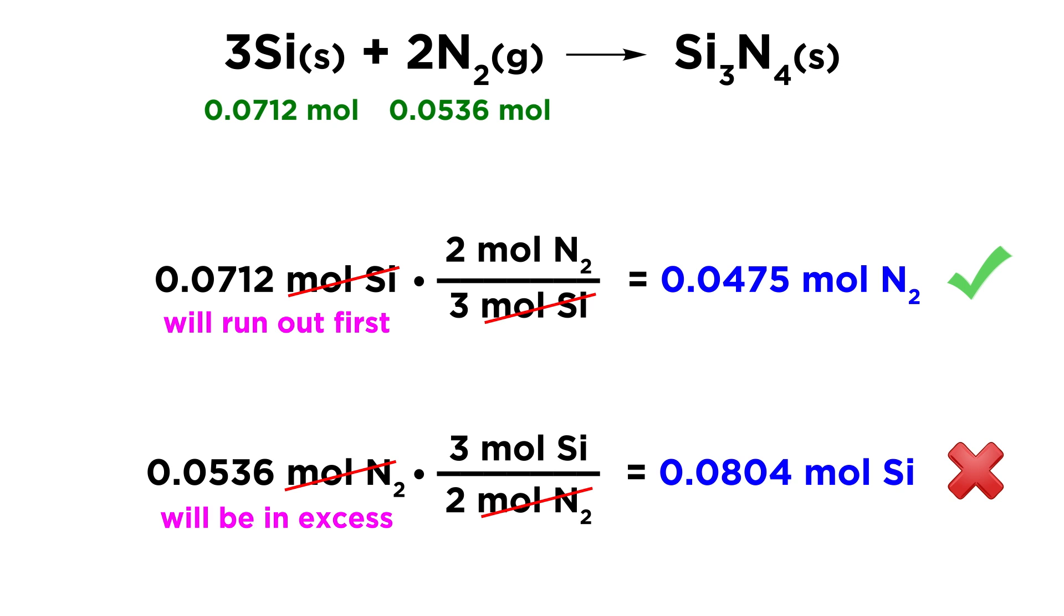That means nitrogen will be in excess. So once again, we are saying that regardless of which reactant we're looking at, we're realizing that silicon must be the limiting reagent.